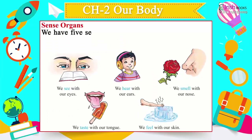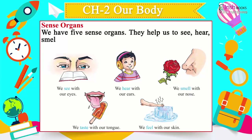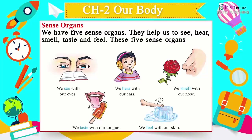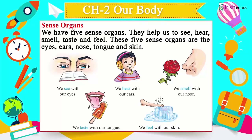Sense organs: We have five sense organs. They help us to see, hear, smell, taste, and feel. These five sense organs are the eyes, ears, nose, tongue, and skin.